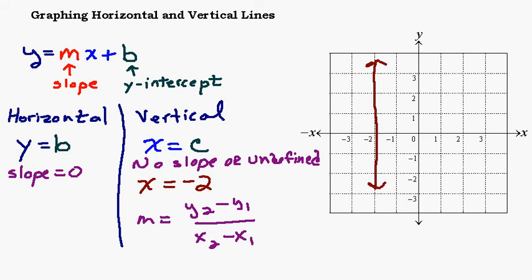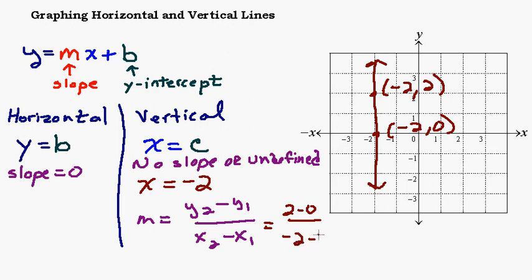If you pick two points on the line — say negative 2, 2 and negative 2, 0 — and plug them into the formula, you get 2 minus 0 over negative 2 minus negative 2. Watch your negatives: negative 2 minus negative 2 gives you 2 over 0. You can't divide by 0 — if you punch this into your calculator, it's going to say error or dividing by zero error, depending on your calculator.